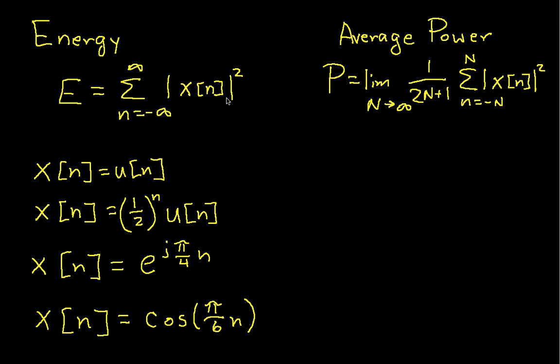The reason we call this energy is that in electrical circuits, energy and power dissipated in a resistor are proportional to the voltage squared and the current squared. We've generalized that to say the energy in a signal is given by the total squared value, and the power is given by the average squared value. Without talking about it much more, let's start working through the examples.